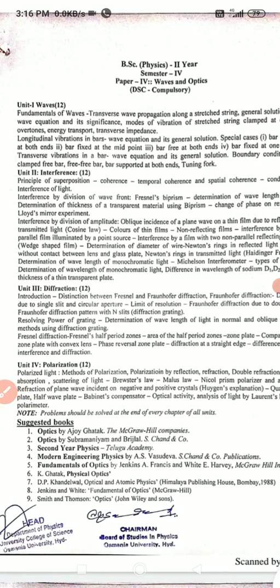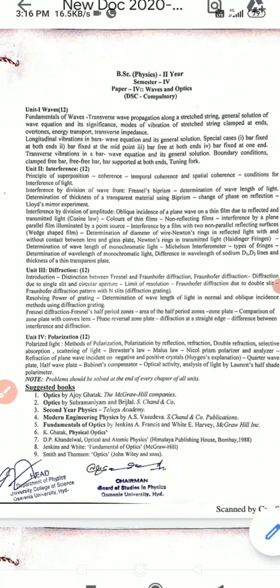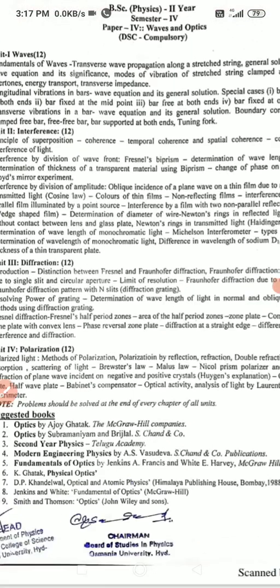This time we have a non-corona pattern — we have four units and there is an internal choice A or B. You have to write only one question from one unit. For the first unit, compulsory questions are transverse wave propagation along a stretched string, general solution of wave equation and its significance, and modes of vibration of stretched string clamped at ends. In the second part we have four cases, from which one may be asked.